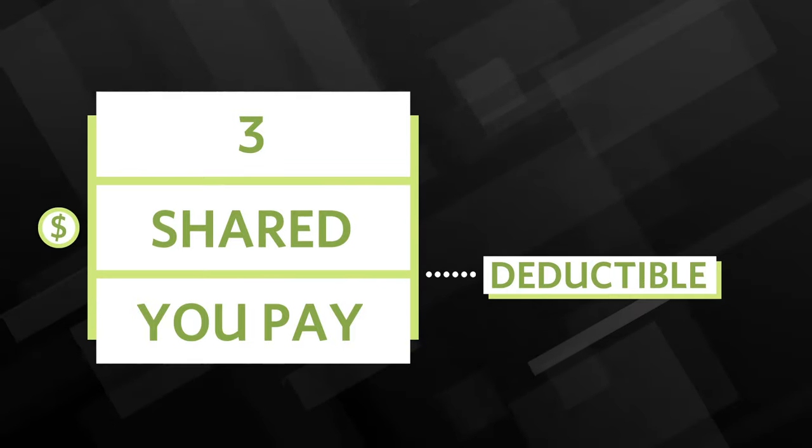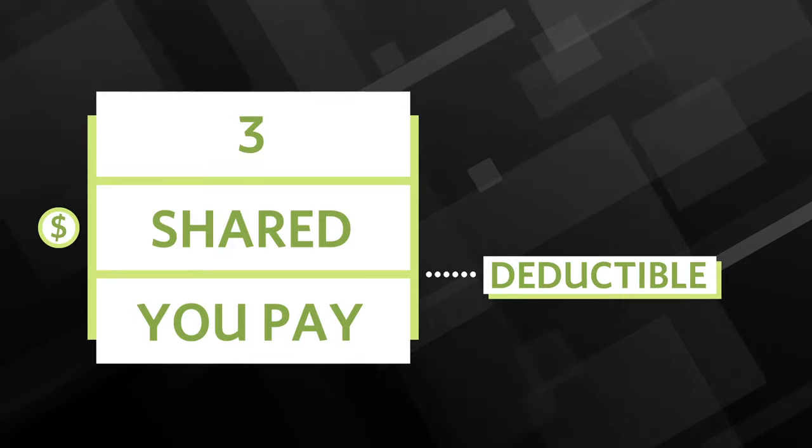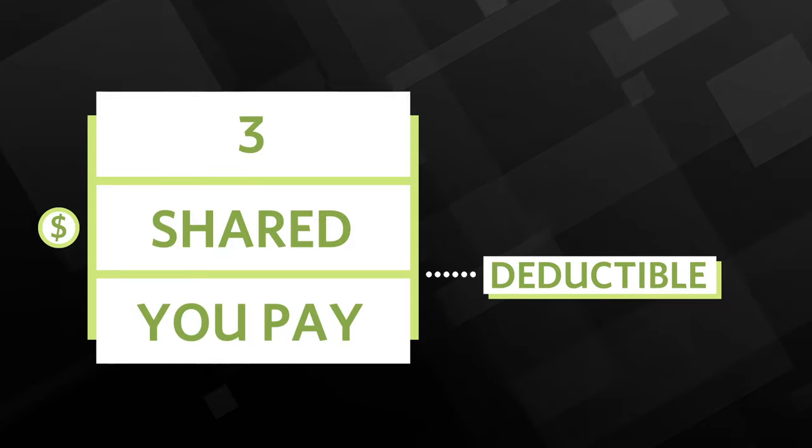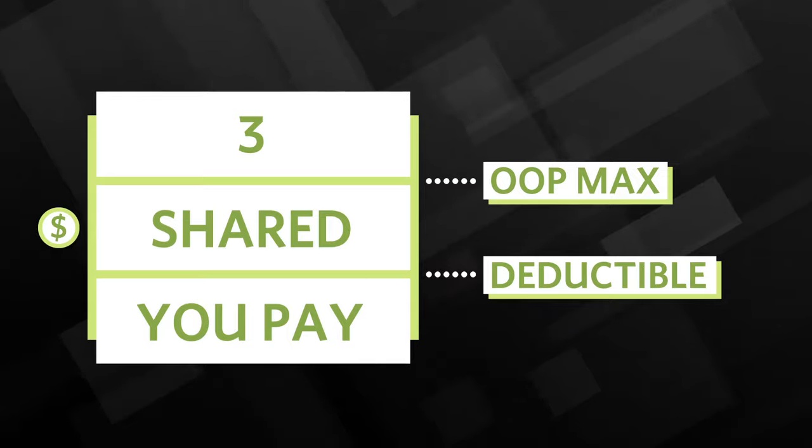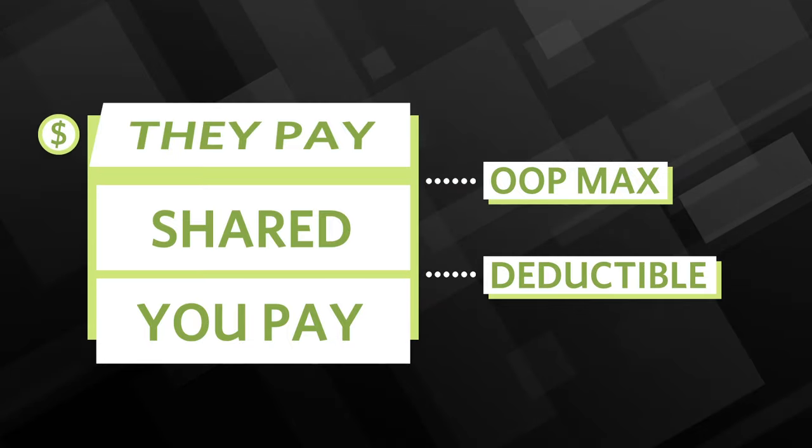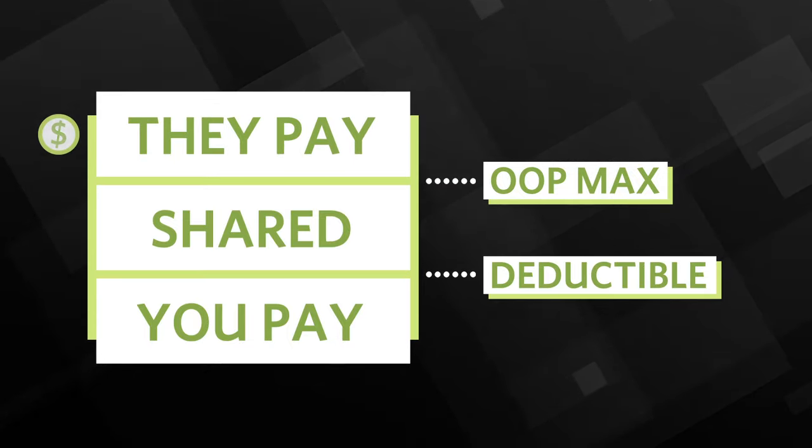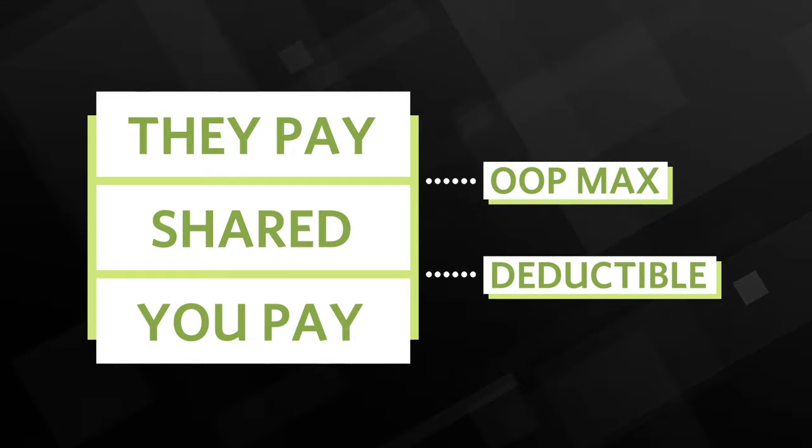And that's where you're splitting the cost with your insurance company through co-insurance. If your medical expenses get so high that the total of what you paid reaches your yearly out-of-pocket maximum, you move to level three, where all further health care expenses for the rest of the year are 100% covered by your insurance plan.